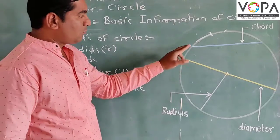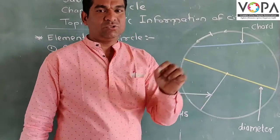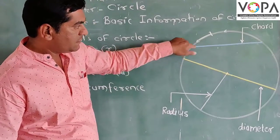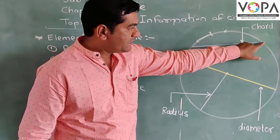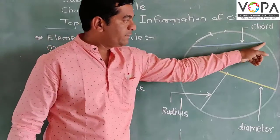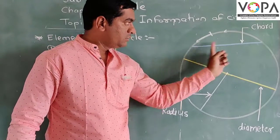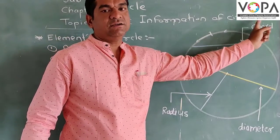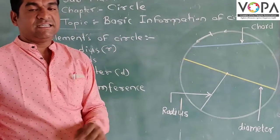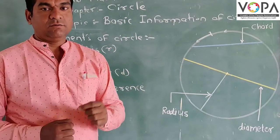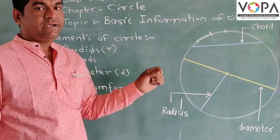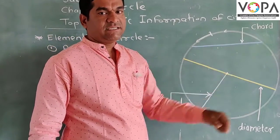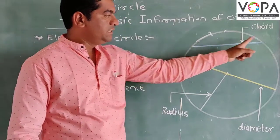Next is the chord. A chord is a segment which joins any two points on the circumference. This segment joins two points on the circumference — that is why it is called a chord.